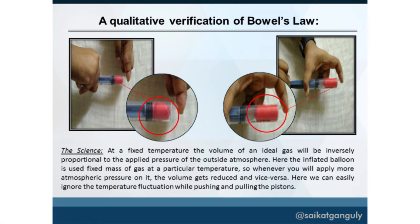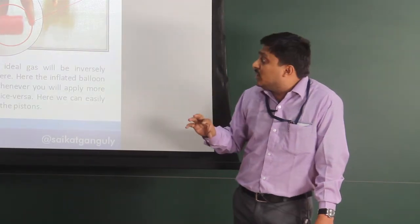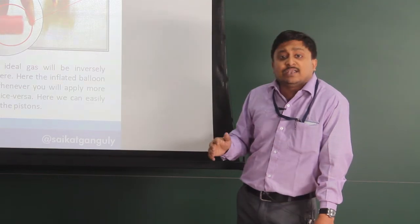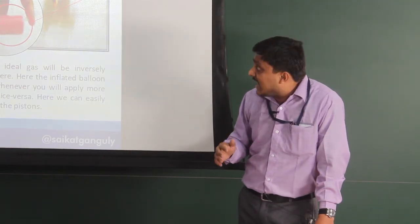This is the experiment for qualitative verification of Boyle's law. Just a balloon and a syringe are required. Whenever you push the plunger, the inside pressure increases, and whenever you pull the plunger, it decreases. This verifies the relationship between volume and pressure at a fixed mass and temperature of a gas.